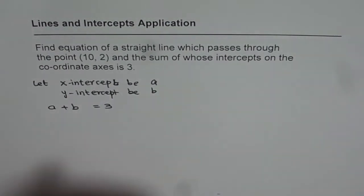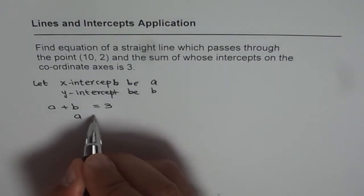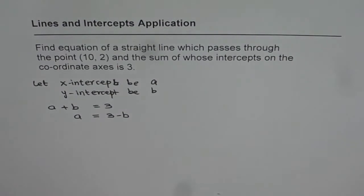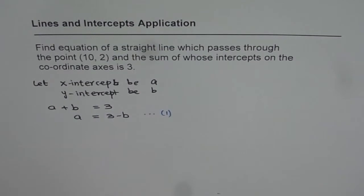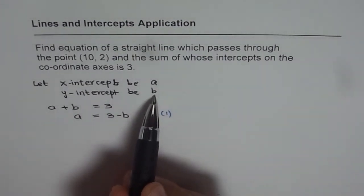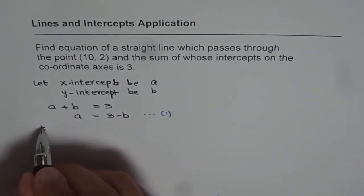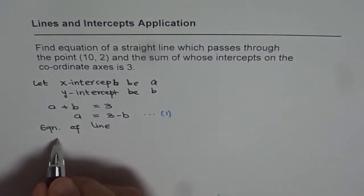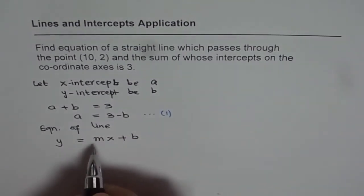We can write what A is in terms of B from here. So we get A = 3 - B. We will call this equation 1. Now, if y-intercept is B, we can always write down the equation of line in slope-intercept form. So the equation of line could be y = mx + B, where M is the slope.